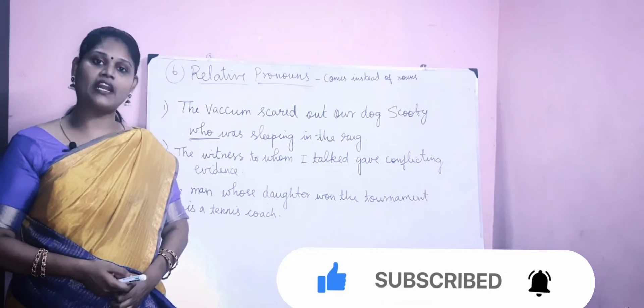The man whose daughter won the tournament is a tennis coach. Here the noun is 'the man,' and you use the possessive form 'whose' for the preceding noun. 'Whose daughter' means 'the man's daughter' — it tells the relationship between the man and the daughter. So when we talk about possessive relationships between persons or things, we use 'whose.'